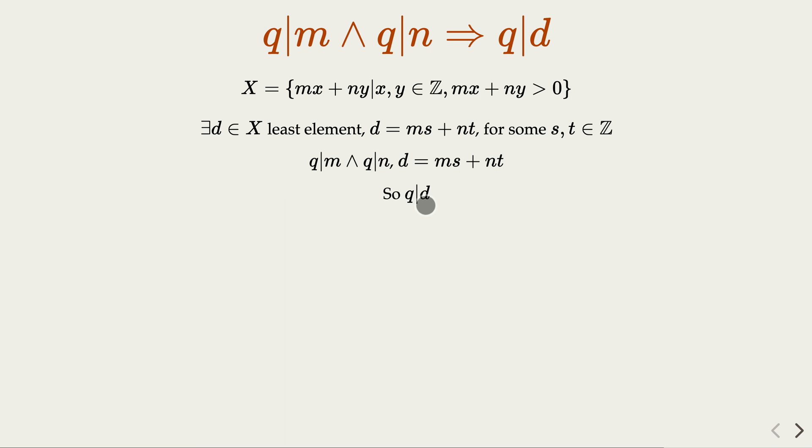So since we have proven the two facts, now we know that indeed by the construction of X, by the well-ordering principle, the least element we claim that it is gcd. So we prove by construction.